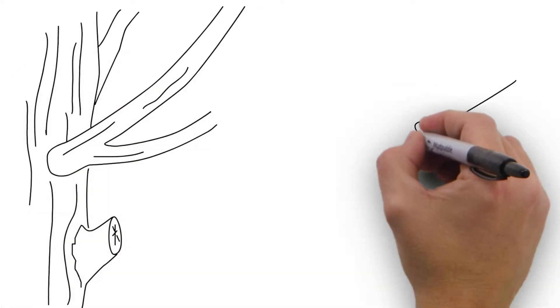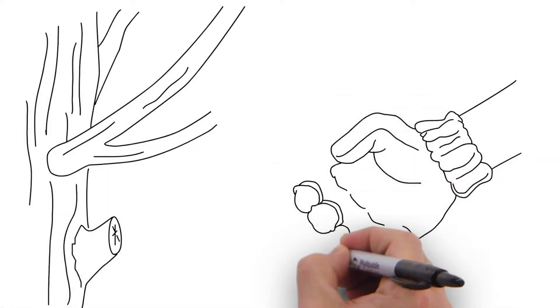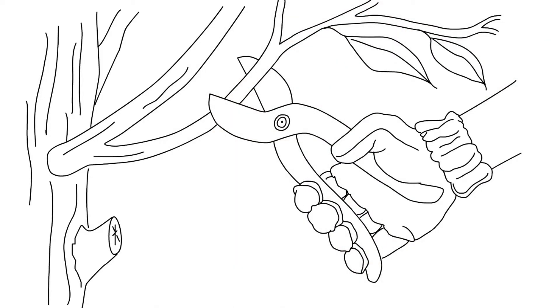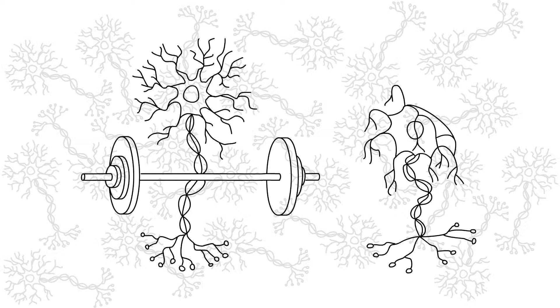Neurologists refer to this process as pruning. Just like pruning a tree, you remove some branches so that others can grow larger and stronger.